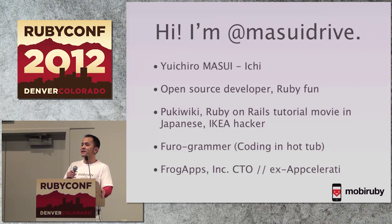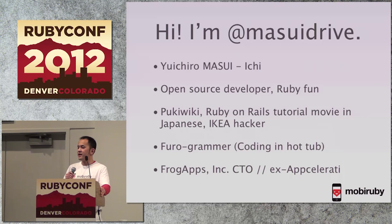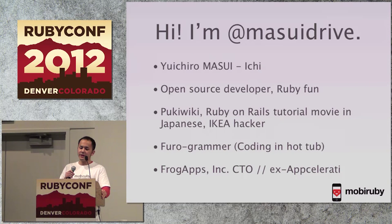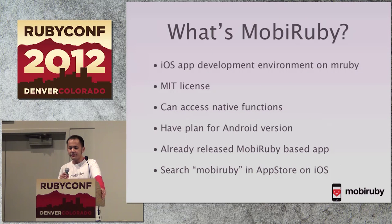Now I'm working at a Japanese startup company called Frog Apps, which has released a food photo sharing application for iPhone and Android. Those applications are not built on MobiRuby — they are native applications. Until September, I had worked at Appcelerator, which released Titanium Mobile, a JavaScript-based iPhone and Android development framework.